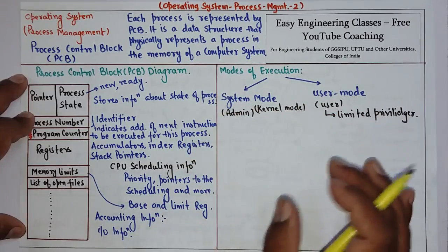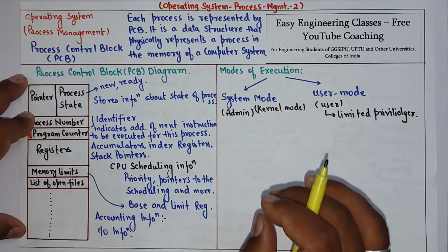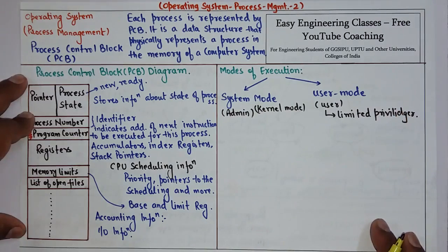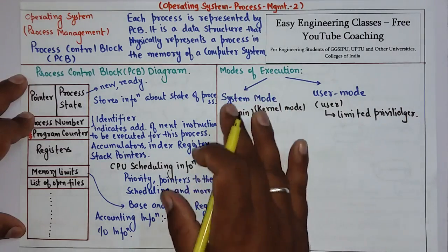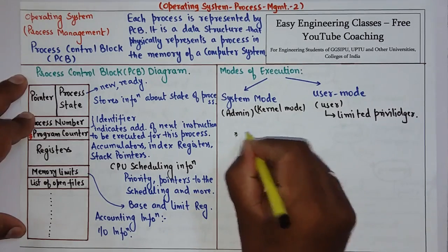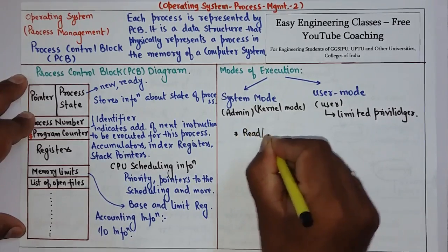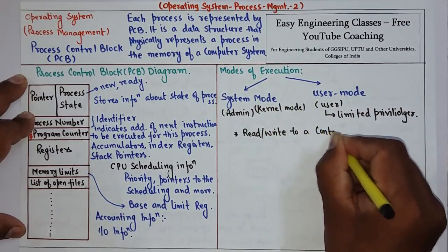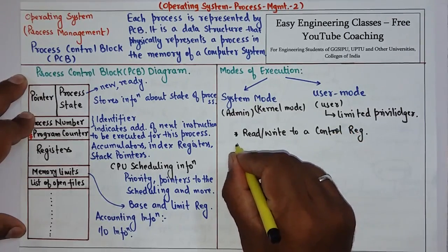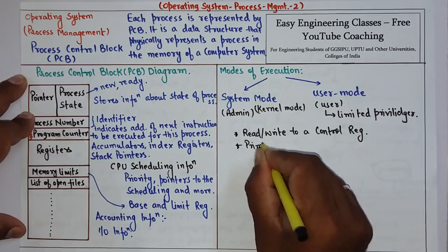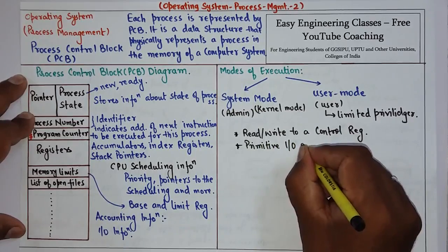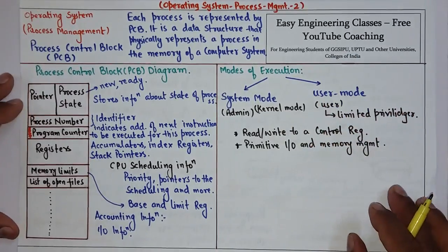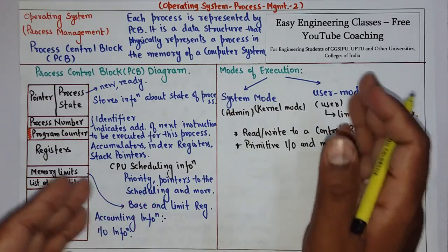The benefit of having two different modes of execution is that in an operating system there are certain instructions that need to be prevented so that a user cannot execute them. Those instructions should be executed only when the process is running in system mode. For example, if a process wants to read or write to a control register, or perform primitive input-output, or use memory management, then system mode is required. This essentially draws a line between the privileges of the user and the system.